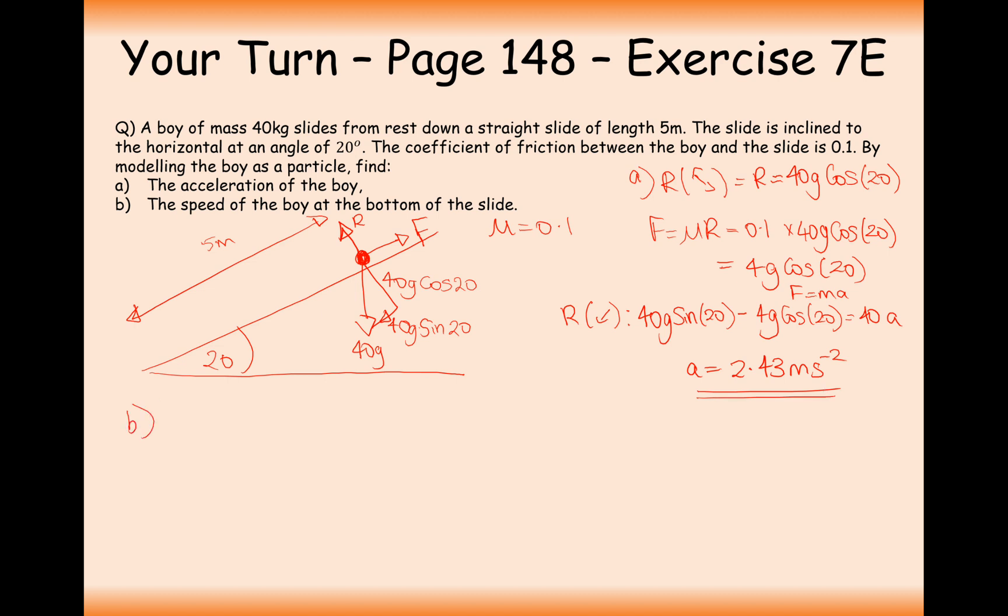Okay, moving on to part B then. Find the speed of the boy at the bottom of the slide. So SUVAT. S is the distance traveled, 5. U, he starts from rest, so that's 0. V is what we want to find. A is 2.43, or answer button that I'm going to use in my calculator. So in this case here, it's going to be V squared equals U squared plus 2AS.